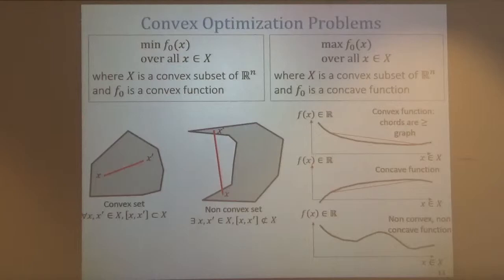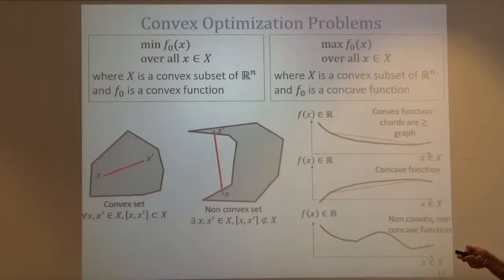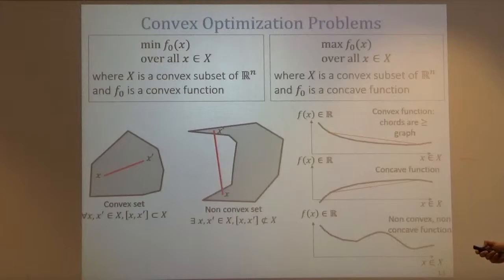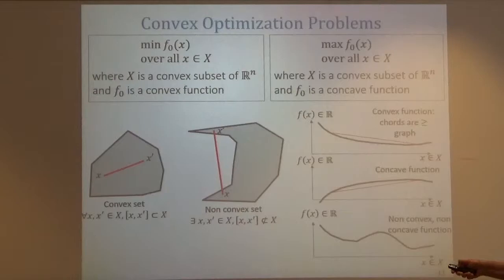With Boyd's convention, a convex problem is about minimizing a convex function over a convex set. You can also maximize a concave function over a convex set — this is exactly equivalent, since minimizing the negative of a convex function is the same as maximizing it. What is a convex set? A convex set is such that if we go from one point to another, the segment between them lies entirely in the domain. The croissant-shaped thing is not convex.